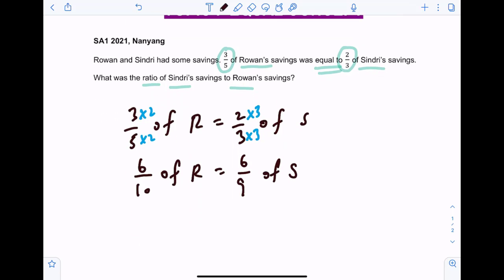Alright, so when we make the numerator the same, we have indeed made them equal to each other.